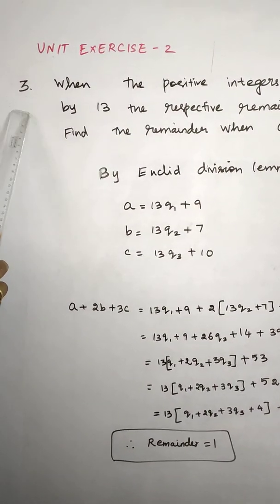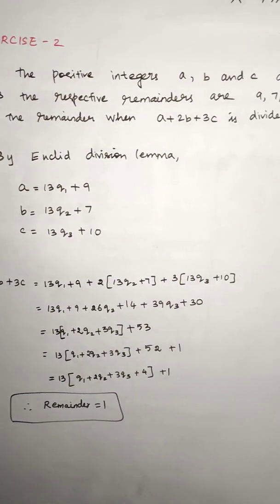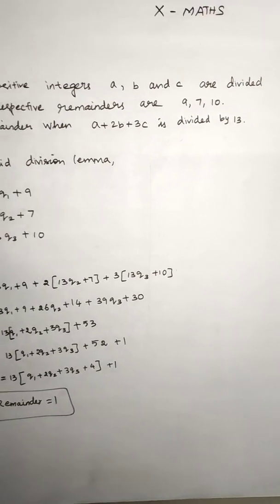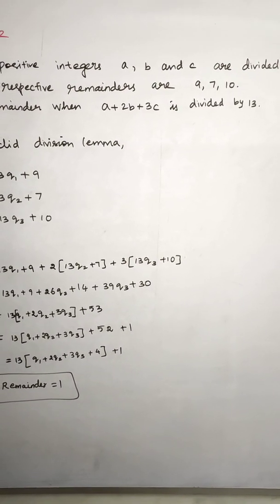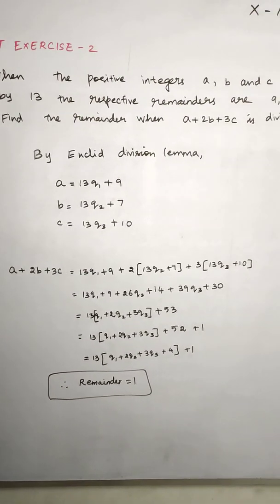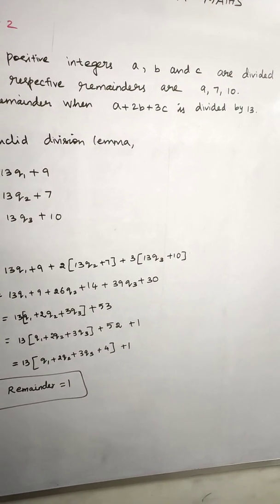Unit x is 2, third sum. When the positive integers a, b, and c are divided by 13, the respective remainders are 9, 7, and 10. Find the remainder when a plus 2b plus 3c is divided by 13.